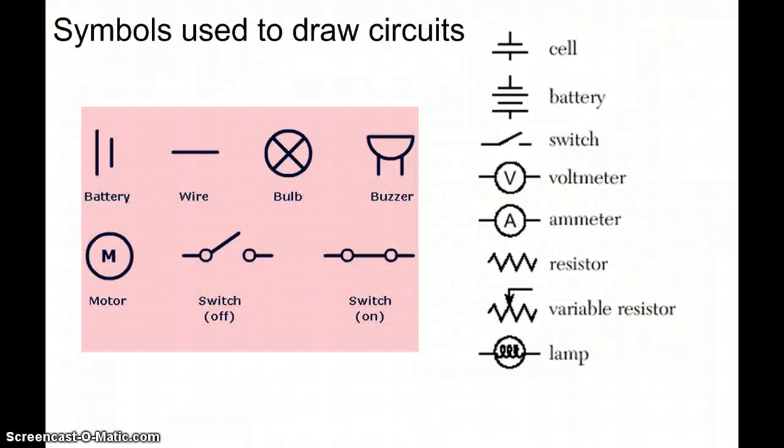Some symbols that we will use to draw circuits. Battery: couple lines. Wire: pretty simple. Light bulb: an X. Buzzer: kind of looks like an upside down bell. Motor. Switch: we have an on and an off switch. Some other things. Sometimes light bulbs can be resistors, look like a zigzag line. We won't use these very much, but sometimes we might. And those are our symbols that we will use. You may want to pause this video here and write down what our symbols are.